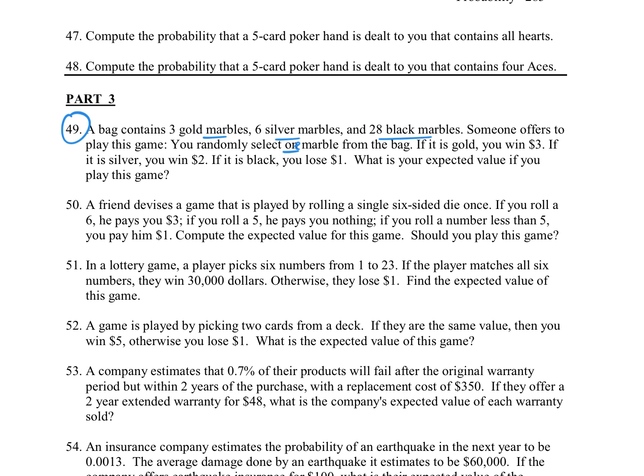What is your expected value if you play this game? Alright, so we know that the probability of winning gold would be 3 out of a total of 3 plus 6 plus 28, so we have 3 out of 37, and that would allow us to win $3. The next thing that could happen is that it's silver. There are 6 silver ones, so we're going to have 6 out of 37, and if we win that, we win $2.